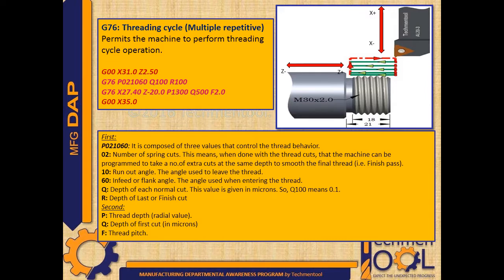10 represents the run-out angle — the angle used to leave the thread. 60 indicates the in-feed or flank angle — the angle used when entering the thread. Q indicates the depth of each normal cut, given in microns. R is the depth of the last or finished cut. In the second pink colored block, P indicates thread depth as a radial value, Q indicates depth of first cut, and F indicates thread pitch.